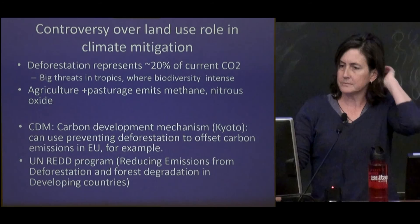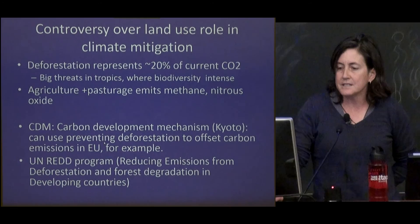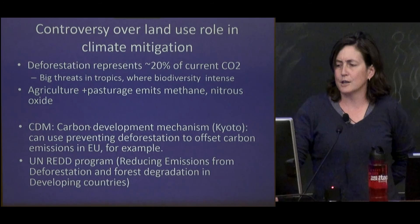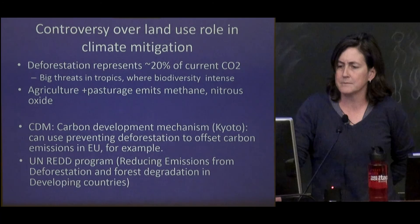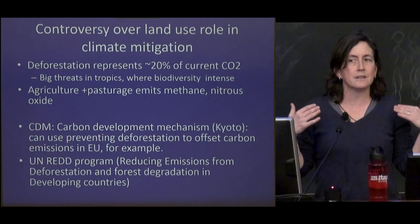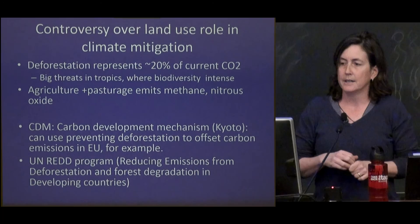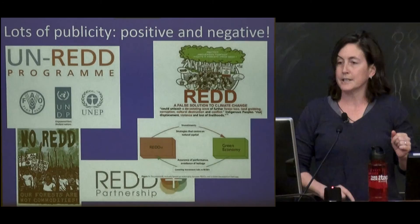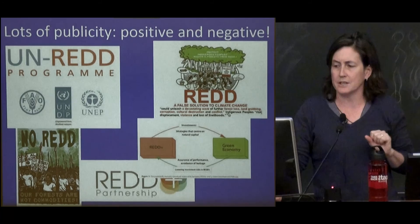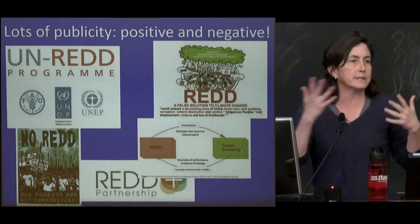What should be the role of land use in thinking about climate change? Right now, under the Kyoto Protocol in the EU, there's the carbon development mechanism, which you can use — preventing deforestation or other such projects — to try to offset carbon emissions from facilities in the EU. There's also the UN REDD program, which is reducing emissions from deforestation and forest degradation in developing countries. These are very controversial within the climate change community. Some say REDD is a false solution to climate change; others see it as one element of a green economy.